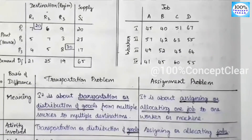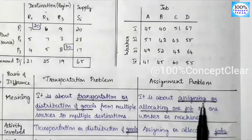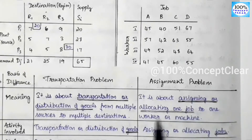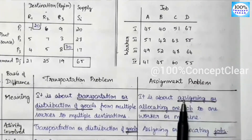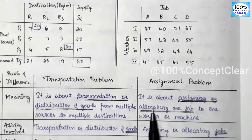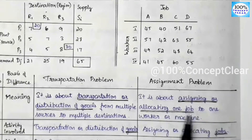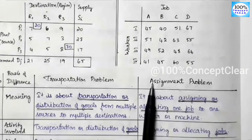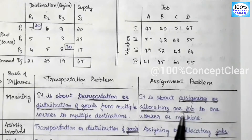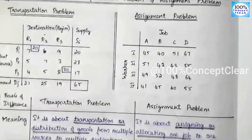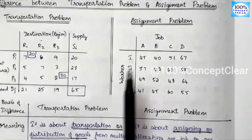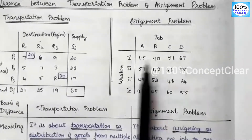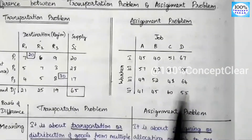The assignment problem is about assigning or allocating one job to one worker or machine. In the assignment problem, we allocate one job to one worker or machine. For example, there are four workers, and we assign one job to each of the four workers. That is the assignment problem.